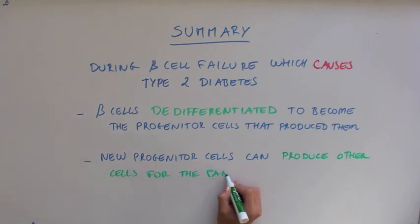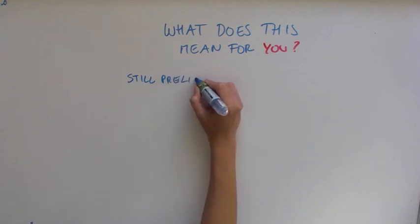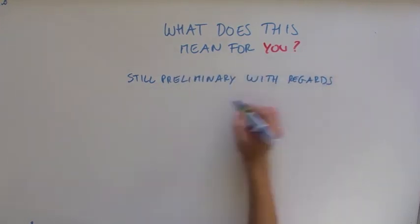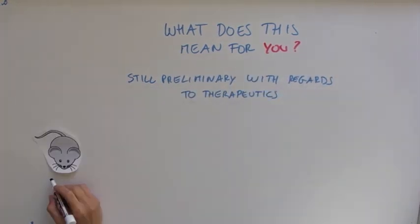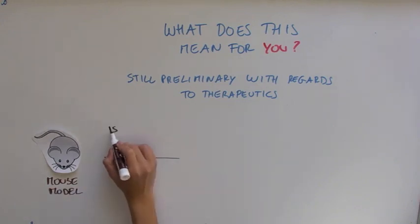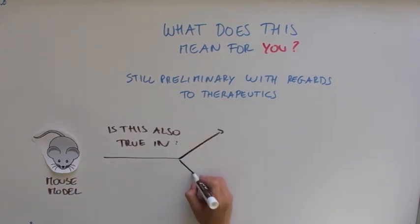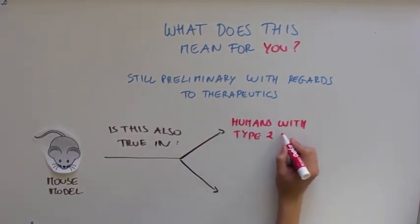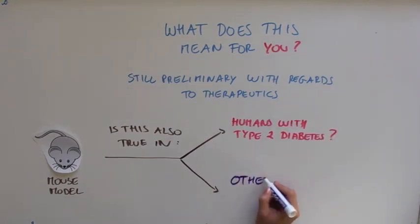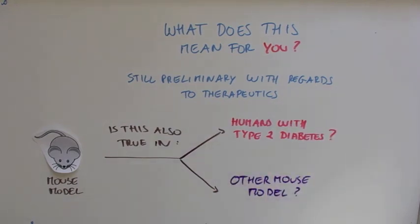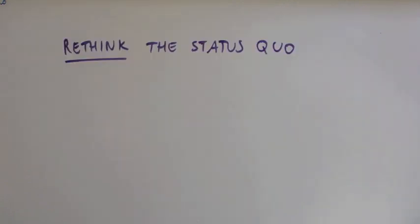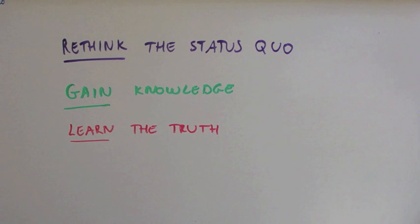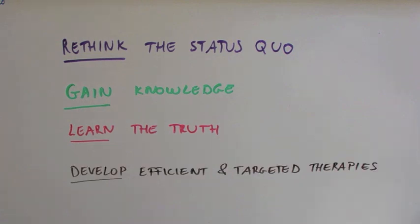This finding is very exciting. But when thinking about therapies for type 2 diabetes, it is still very preliminary. The authors used a mouse model for type 2 diabetes, so it's not clear if this is also what happens in humans during type 2 diabetes development, or even in a different mouse model of type 2 diabetes. As you can see, scientists are always trying to rethink the status quo to gain knowledge and learn the truth about the causes of diseases to develop more efficient and targeted therapies.